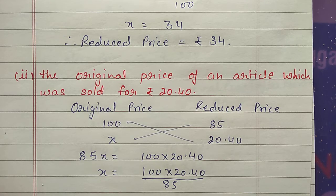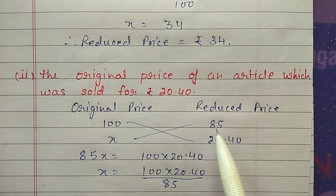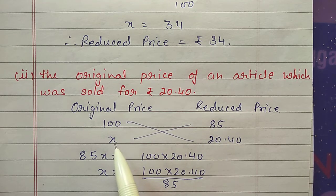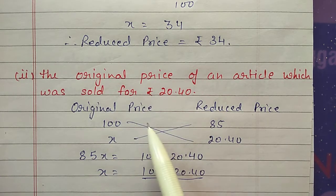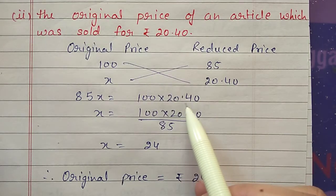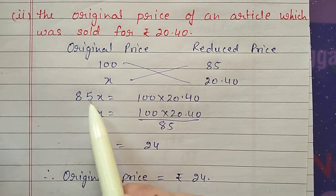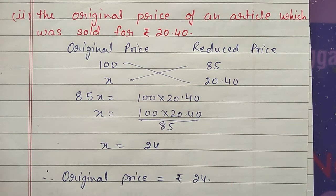Second part: find the original price of an article sold for 20 rupees 40 paise after a 15 percent reduction. Suppose original price is 100, after 15 percent reduction it becomes 85. Let original price be x, after reducing it becomes 20.40. Cross multiply: 85x equals 100 into 20.40. Shift 85 to the other side, cancel — x equals 24 rupees. So original price was 24 rupees.